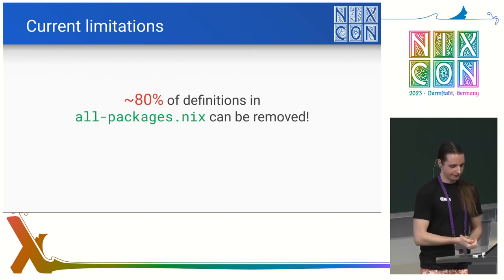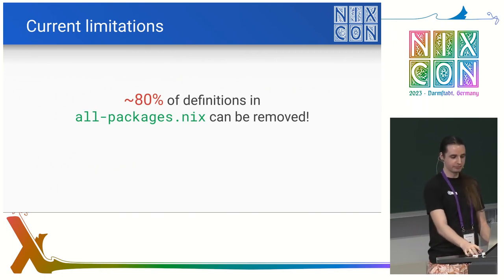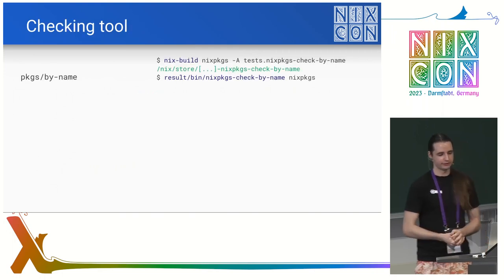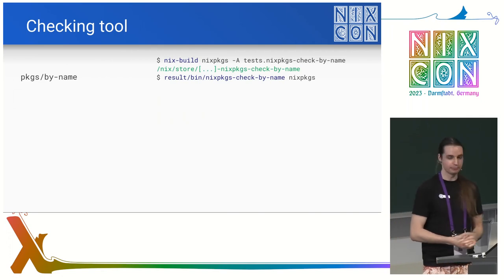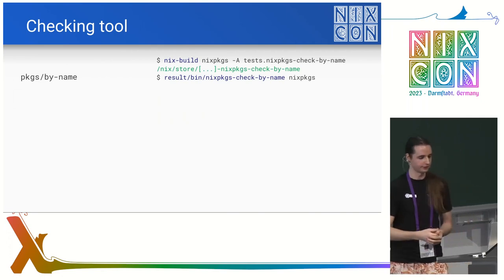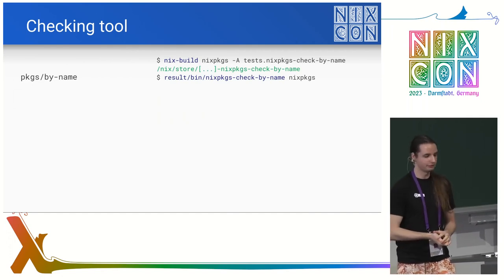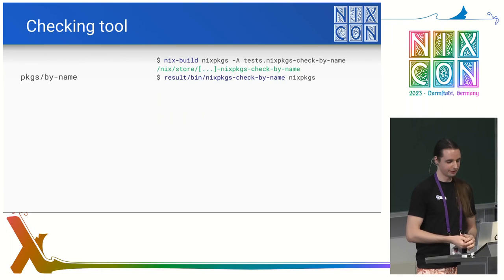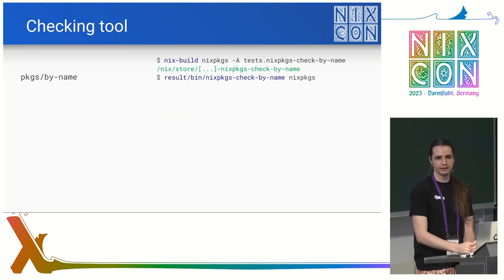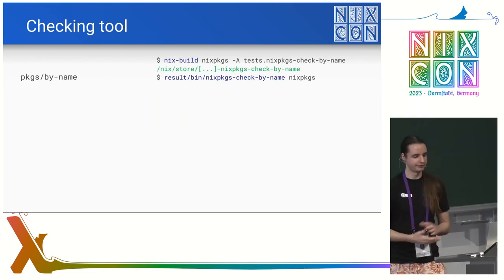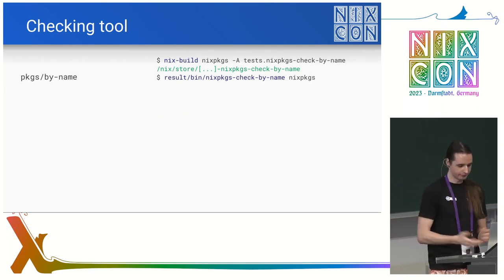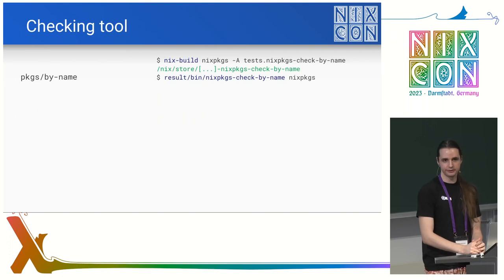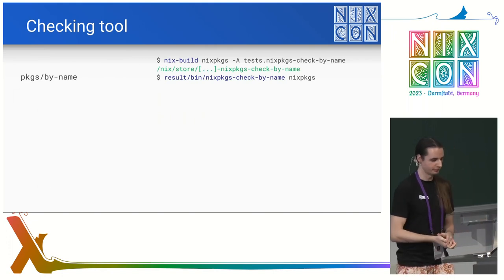Now we've looked at the design — let's look at how the implementation is going. The first step to make this work smoothly is to have a bunch of checks to make sure the standard is honored in this structure. We have a tool for that; it's already in Nixpkgs and merged there. It's probably the best way to explore this design, see its limitations, and see if there are any problems with it.